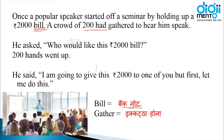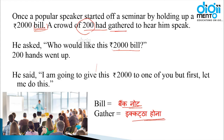A crowd of 200 had gathered to hear him speak — वहाँ पर 200 लोग इकट्ठे हुए थे। 'Gathered' का मतलब होता है इकट्ठा होना। He asked — उसने पूछा — 'Who would like this 2000 rupee bill?' — कि किसको ये 2000 रुपए का बिल चाहिए? 200 hands went up — तक़रीबन 200 के 200 हाथ ऊपर उठ गए।